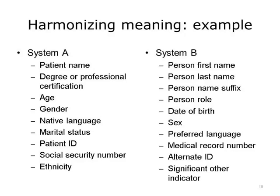Let's go over an example of how challenging semantic harmonization could be. We have System A and System B. Imagine System A wants to send System B demographic information — how would you map the demographics? System A has fields such as patient name, degree of professional certification, age, gender, native language, marital status, patient ID, social security number, and ethnicity.